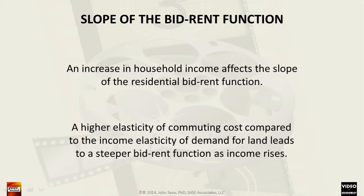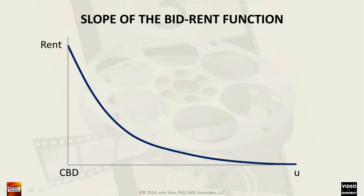For example, many high-income individuals prefer to reside in central Manhattan close to Central Park, or locate further away in the Hamptons on the eastern end of Long Island. Nevertheless, we generally expect bid-rent functions to be concave outward, away from the origin. This may explain why the negative exponential function has been agreeable to use by urban economists for decades.